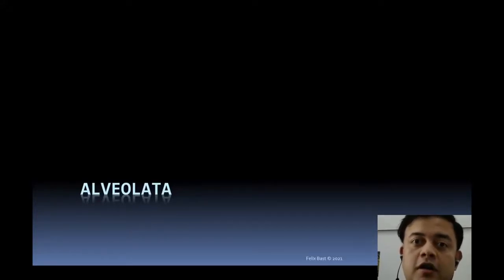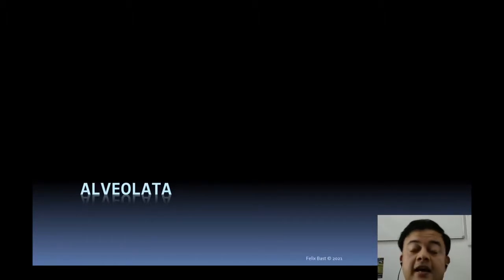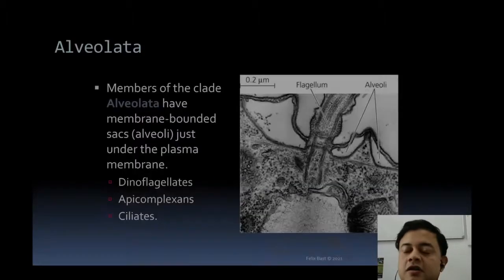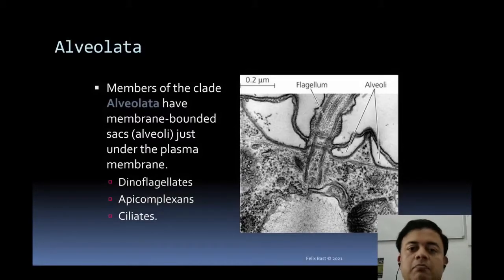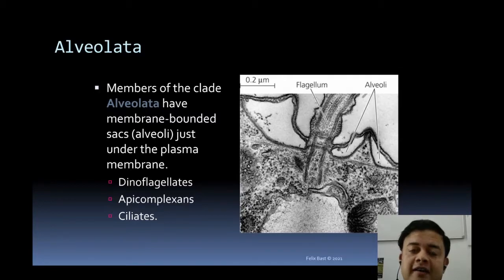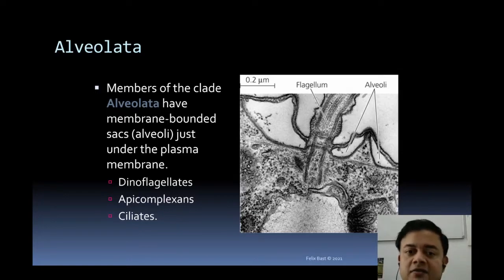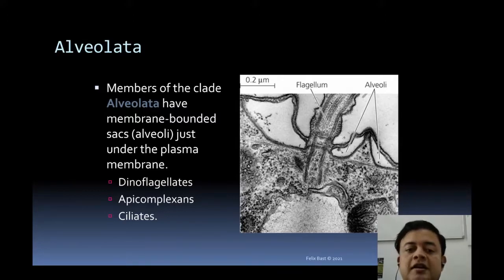Alveolata is a very important group within the chromalveolates — chromista and alveolates. Members of the clade Alveolata have membrane-bounded sacs called alveoli, similar to the air sacs in lungs. These small microscopic sacs are found just under the plasma membrane.